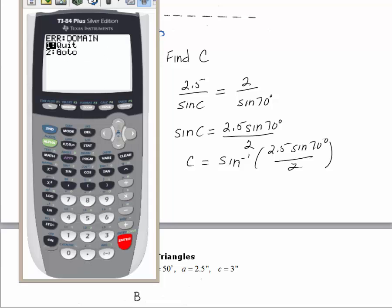Now I get an error that says domain. So I'm getting a domain error which basically in this case means that there is no triangle. And I'll explain to you why that is true.